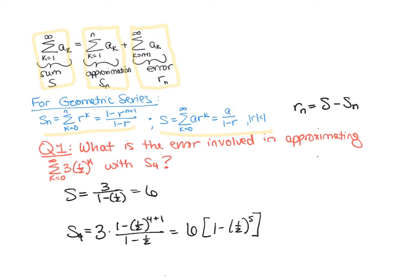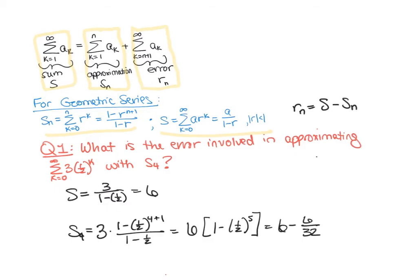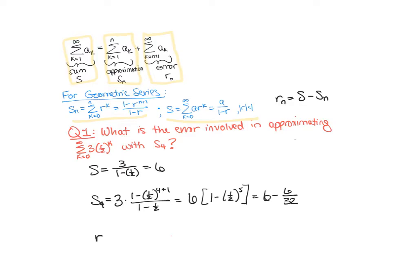If we want to simplify that even more, we could do that. This would be six minus six over two to the fifth, which is 32. Now if we're looking for our remainder, our remainder is going to be the difference between our actual sum and our approximation, so S minus S4. We get six minus six minus six over 32, which reduces to just six over 32 as our error.